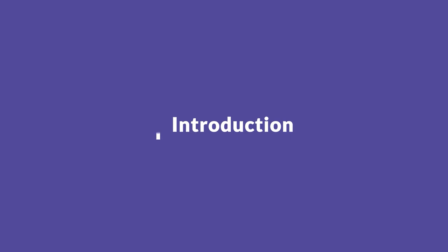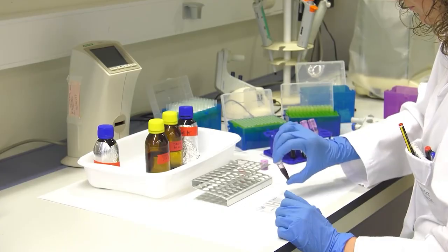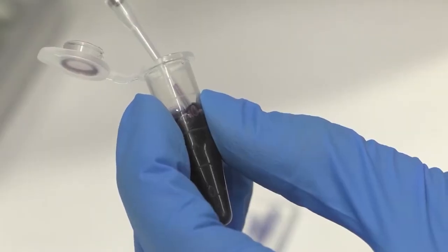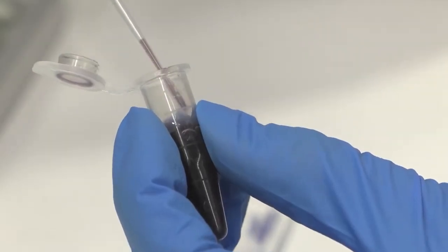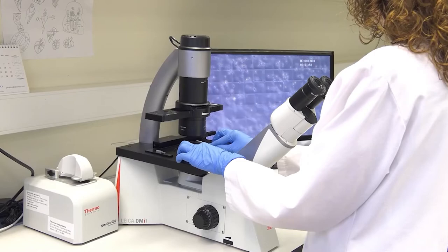Introduction. The white blood cell or leukocyte count allows to determine if the concentration in blood of these cells is normal or not. However, it does not provide information about the composition of the different leukocyte types in the sample.